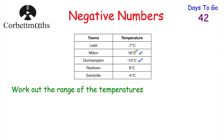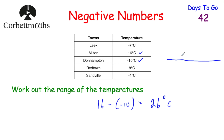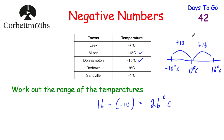So we need to work out the difference between 16 and negative 10. We do 16 subtract negative 10. When you subtract a negative it goes back up — it's the same as adding — so we do 16 plus 10, which is 26 degrees Celsius. The range of the temperatures is 26 degrees Celsius. You can also use a number line: from negative 10 to zero is 10 degrees, then from zero to 16 is another 16 degrees, giving a total difference of 26 degrees Celsius.